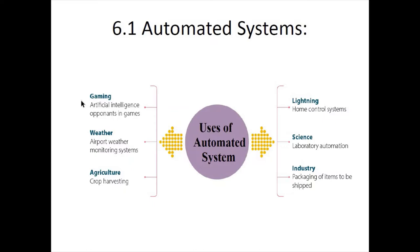Lighting systems react based on the presence of a human. In science, automated systems are used for laboratory automation, where experiments can be conducted for several hours, days, or weeks without any human intervention. In industries, their most common application is in the packaging department.